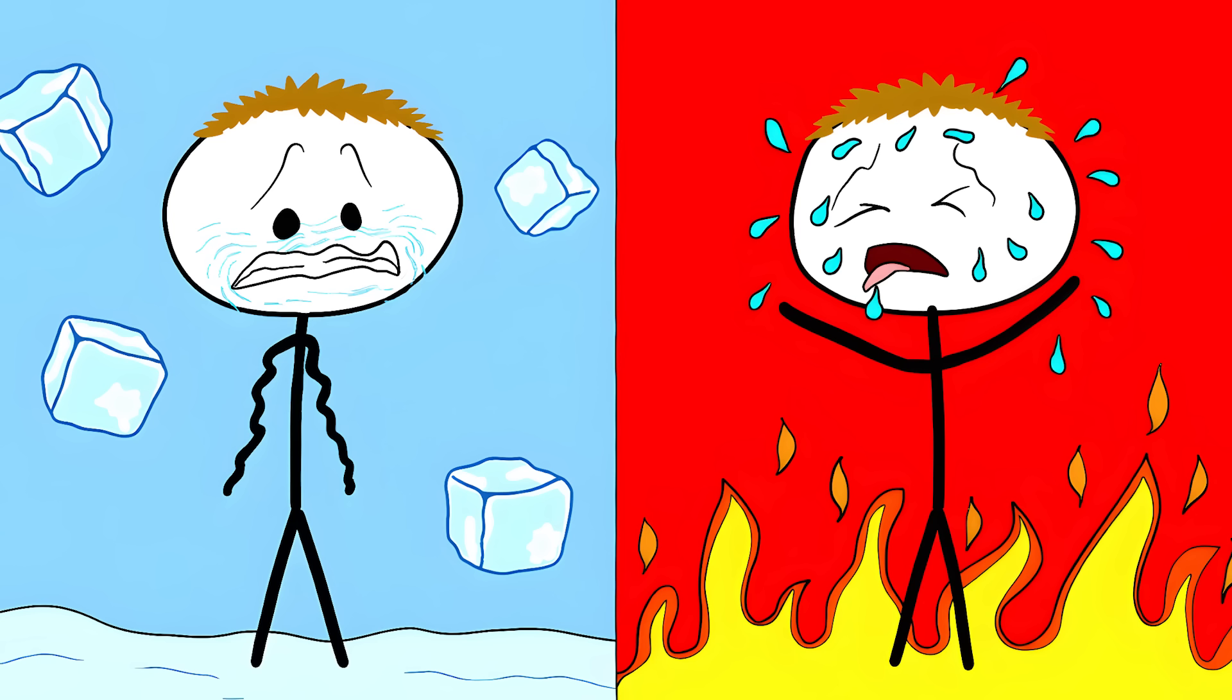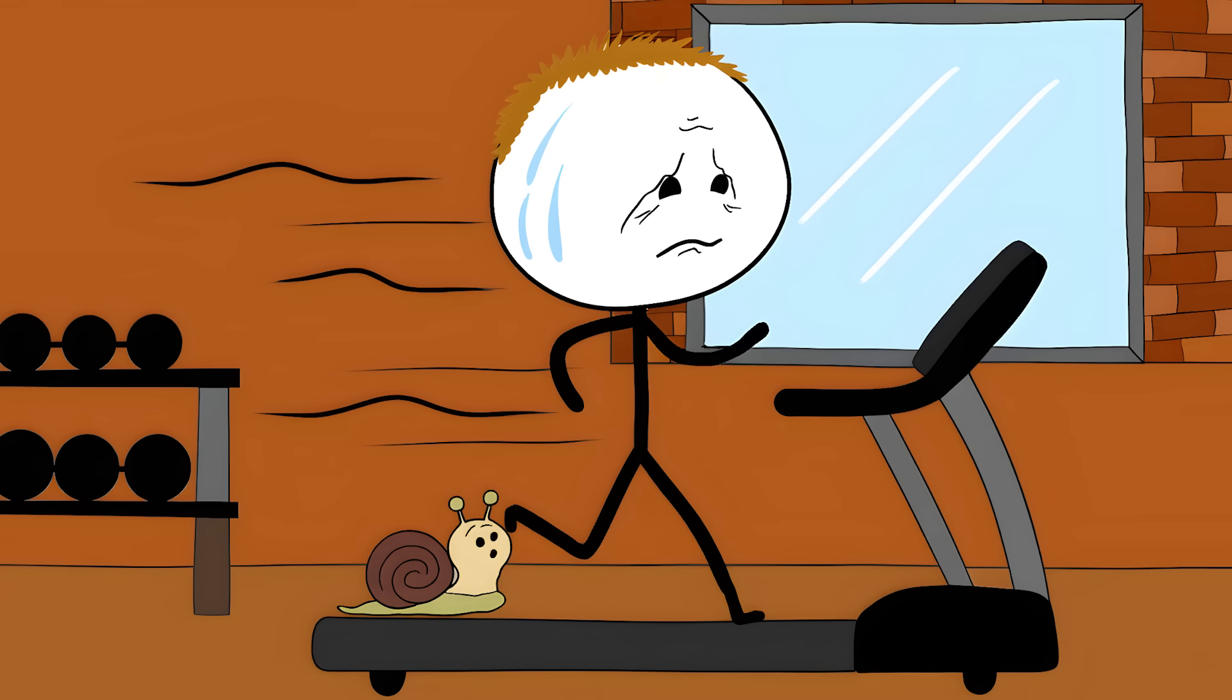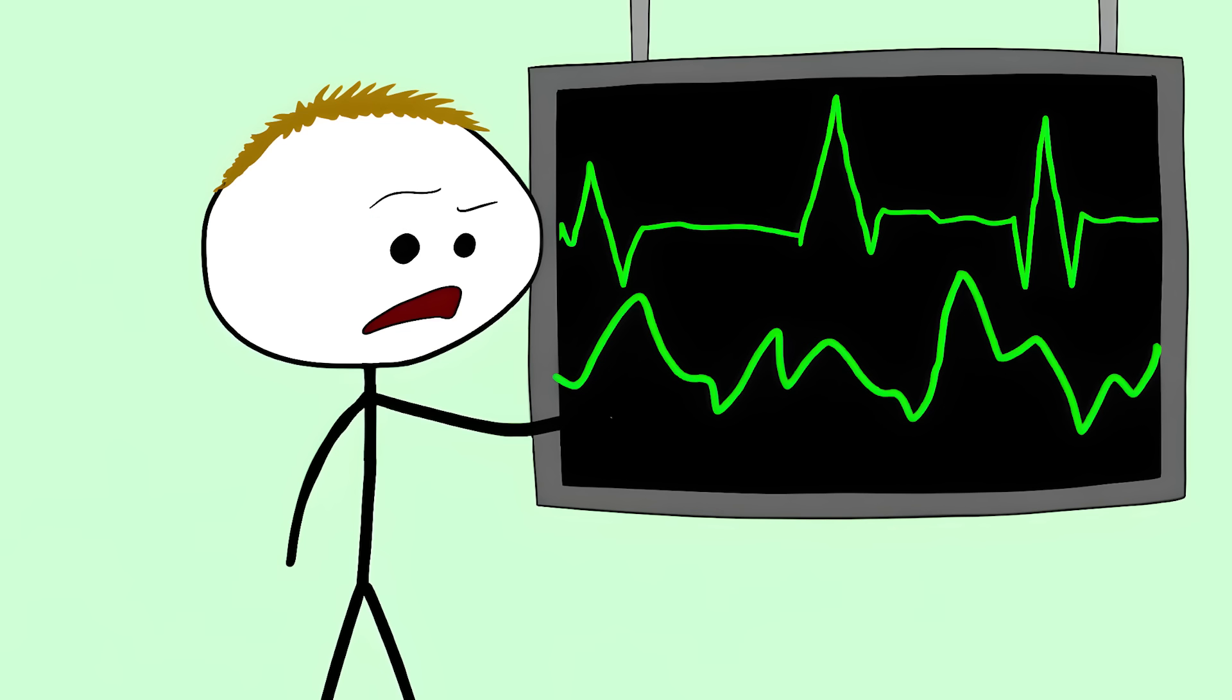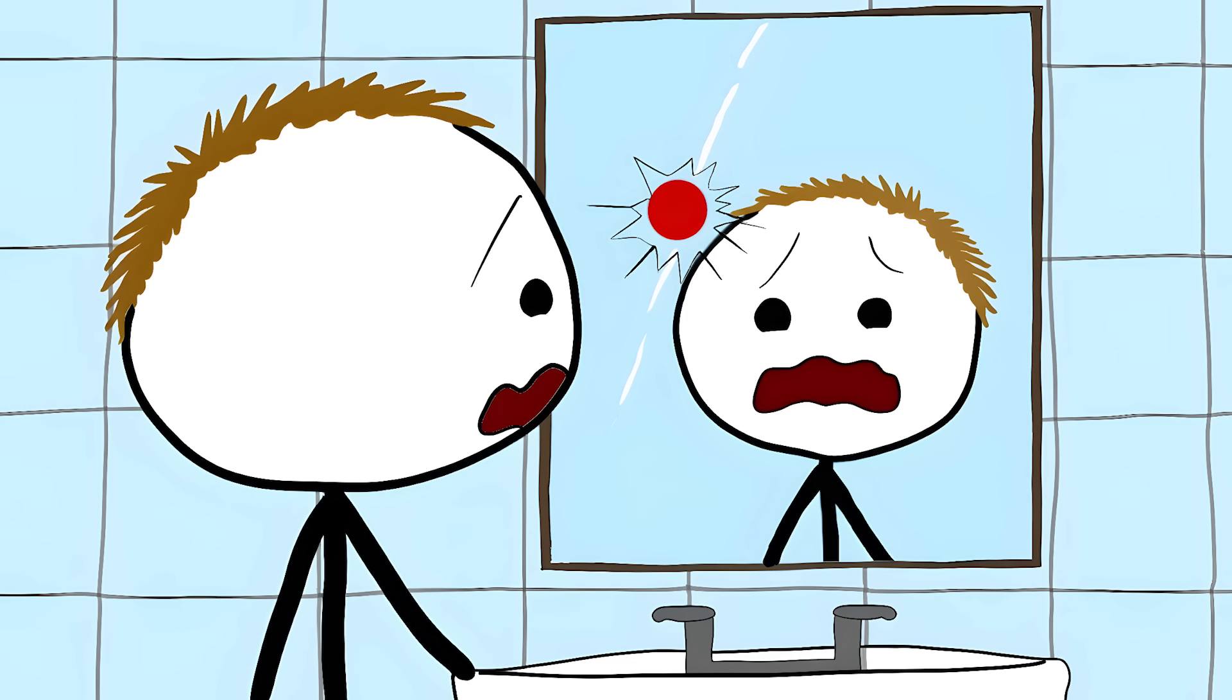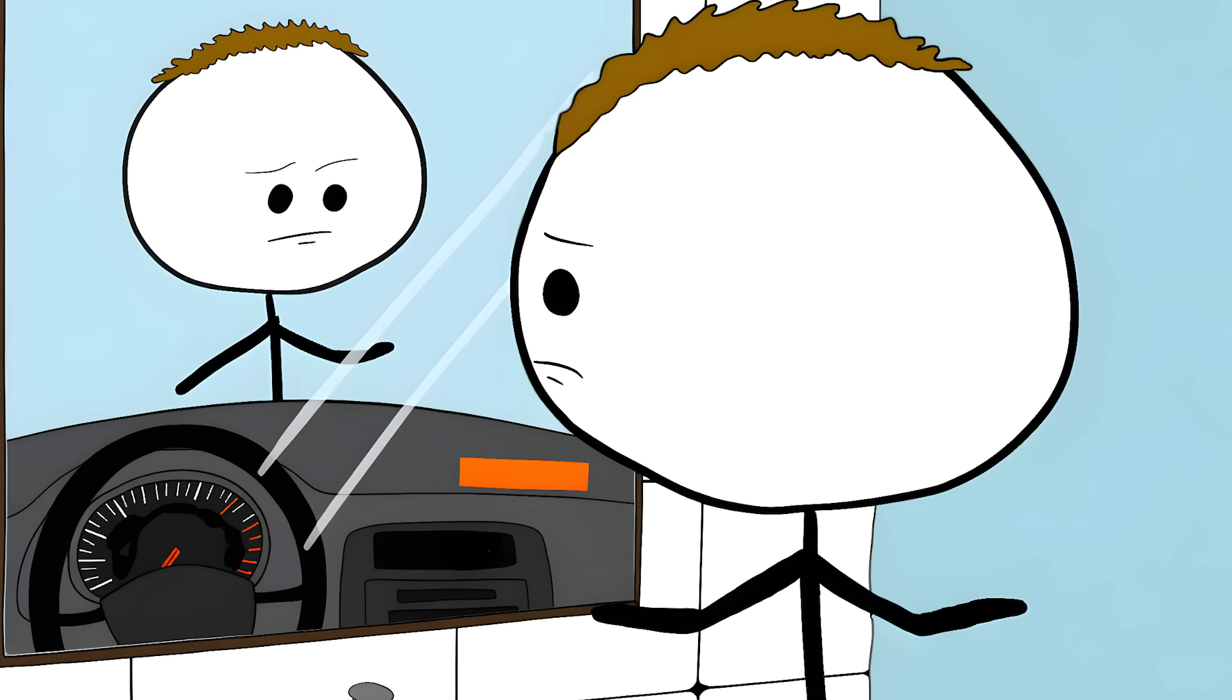When your thyroid fails, your body's thermostat breaks, your metabolism slows down, your brain gets foggy, and your heart rate changes. Left unchecked, it can lead to serious complications. But your eyebrows are giving you an early warning. Think of them as your body's check engine light.